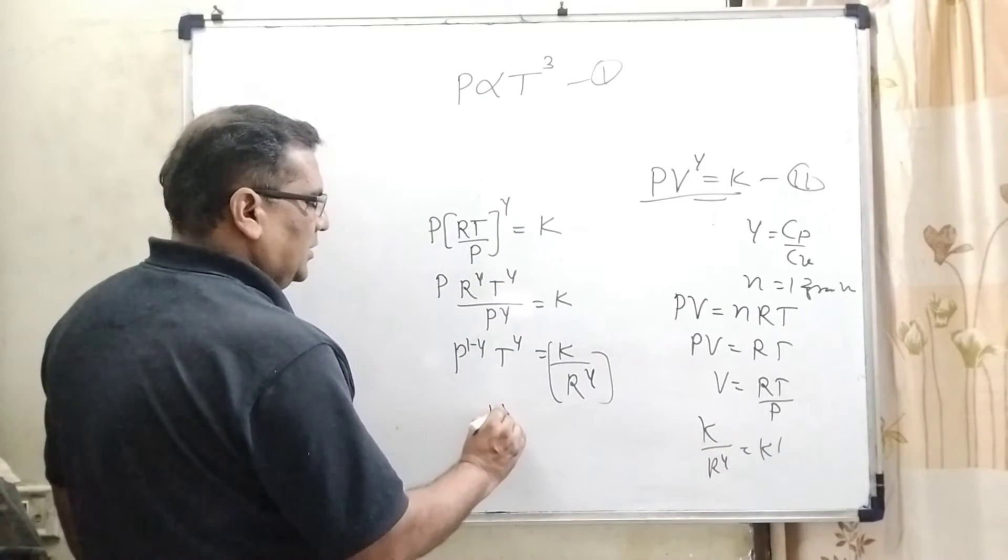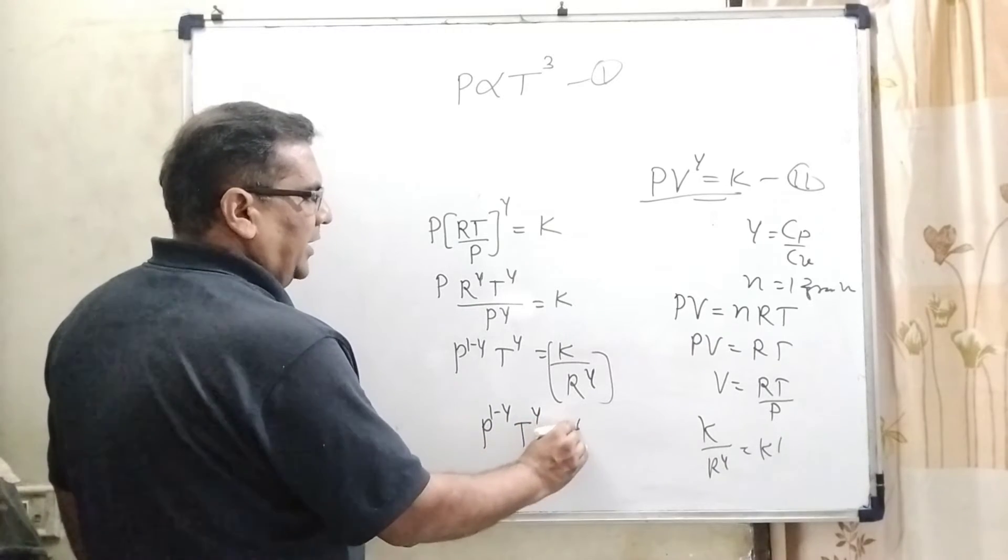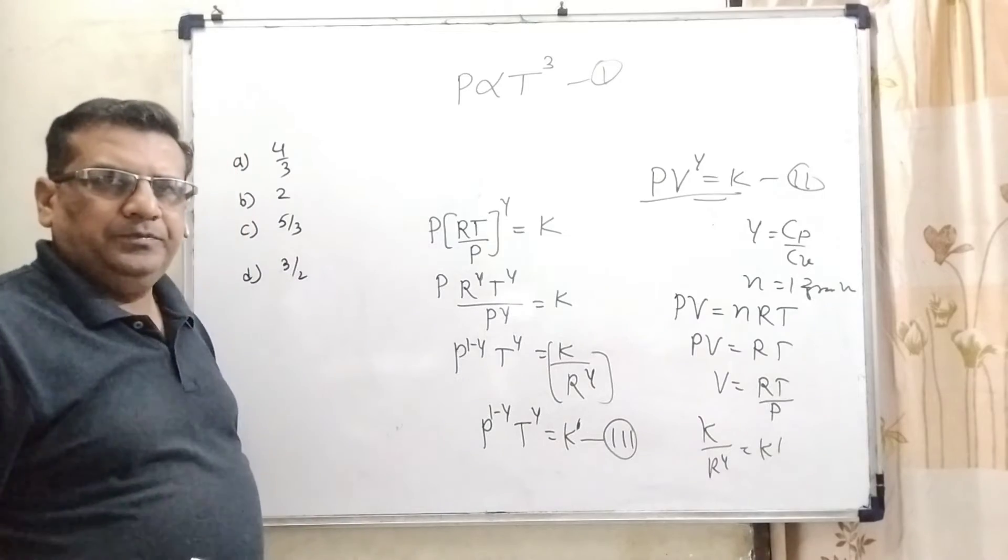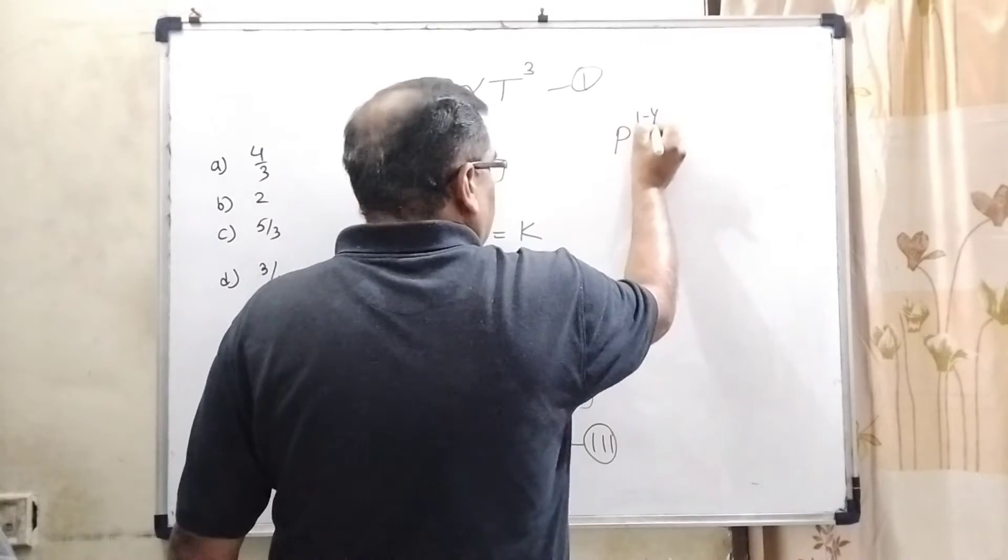So, P raised to the power 1 minus gamma, T raised to the power gamma equal to K dash, T raised to the power minus gamma.